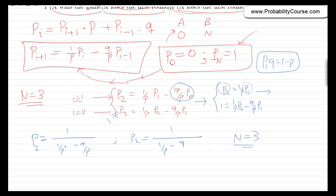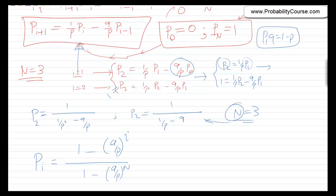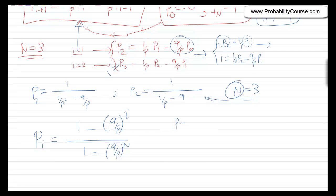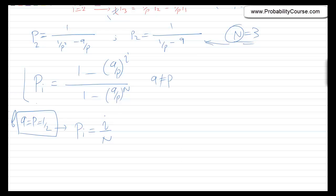For any N, this equation can be solved systematically — the method is discussed in the text. For a general N, the solution is: P(i) = (1 − (Q/P)^i) / (1 − (Q/P)^N). Note that if Q = P = 1/2 this gives 0/0, but simplifying that case yields P(i) = i/N. If Q ≠ P, the general formula applies.